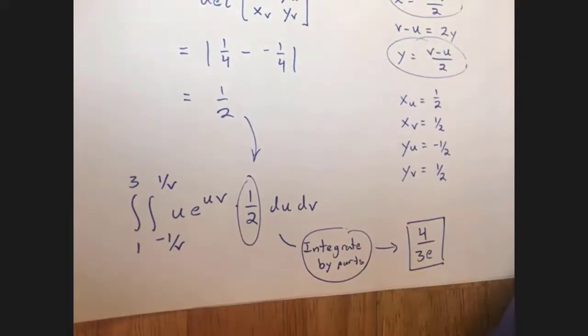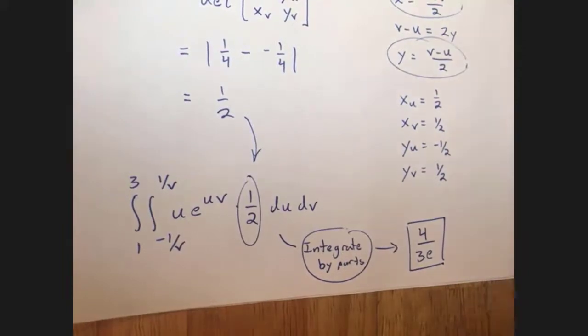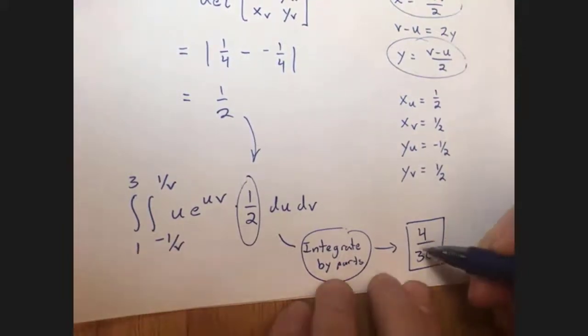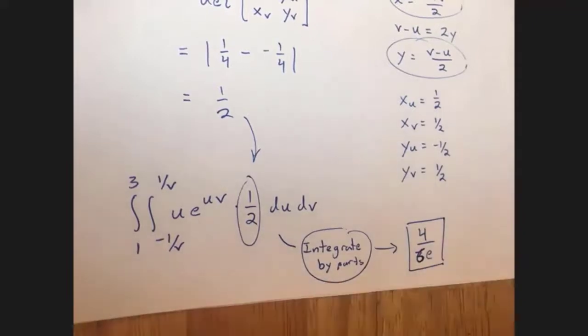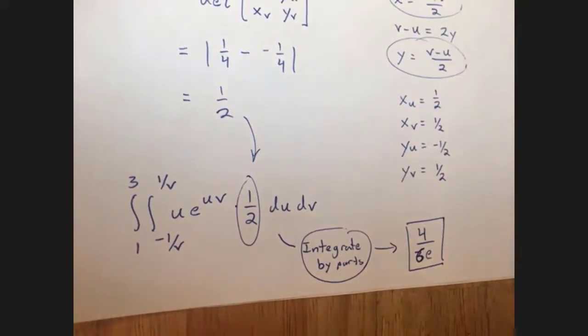Wait — I forgot to include the one-half Jacobian factor in Maple. So the correct final answer is 4 over 3e divided by 2, which gives 2 over 3e.